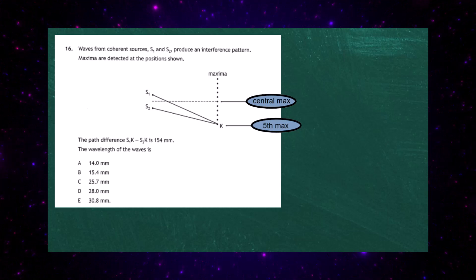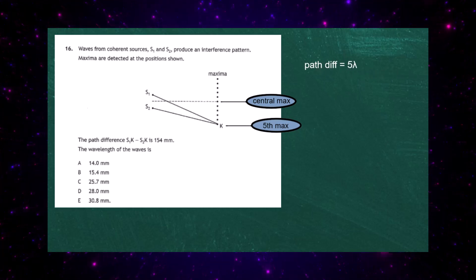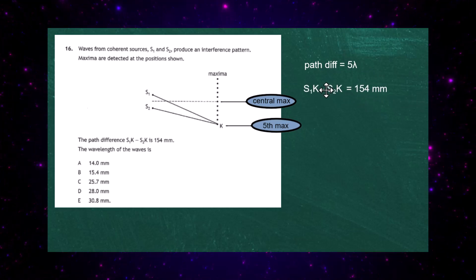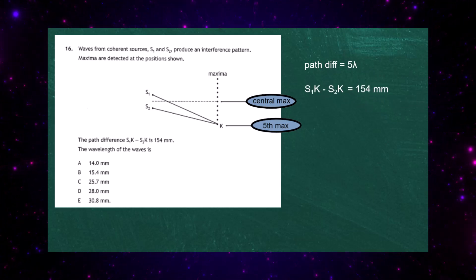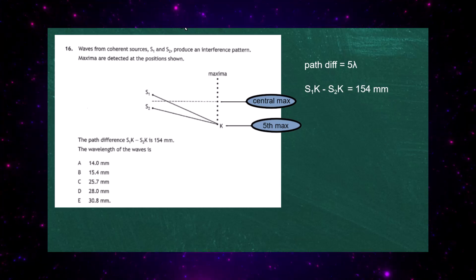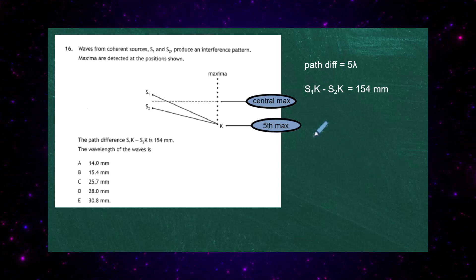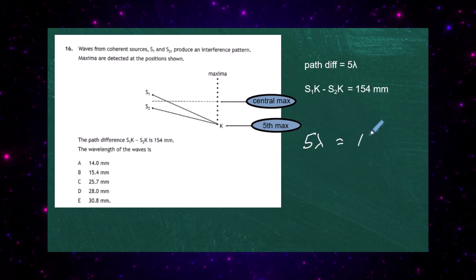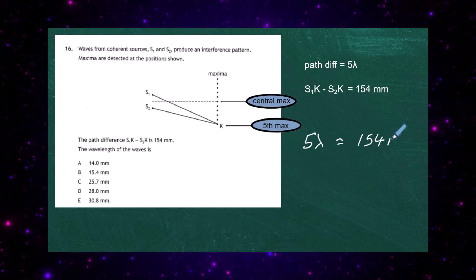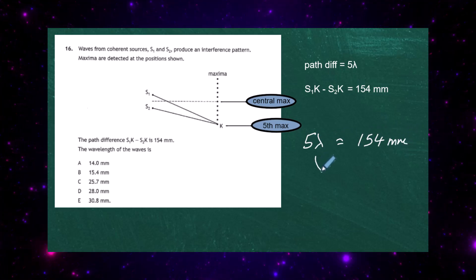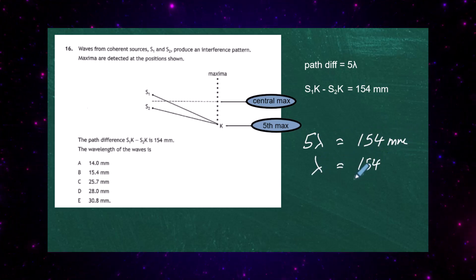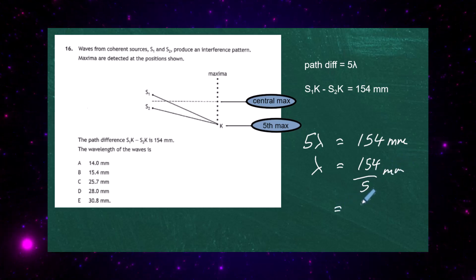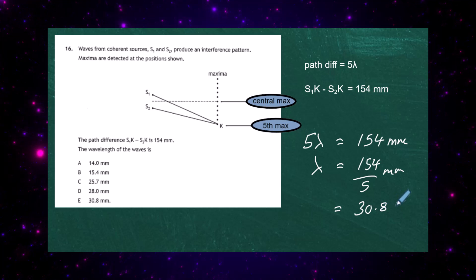What's the condition for the path difference to give you the 5th maximum? Well, the path difference must be equal to 5 whole wavelengths, and we're told that the actual path difference S1K minus S2K is 154mm. So all we have to do is match the two up: 5 whole wavelengths equals 154mm, so we divide both sides by 5 to get 154 divided by 5mm, which gives us 30.8mm.